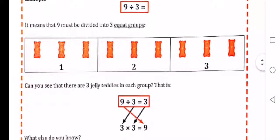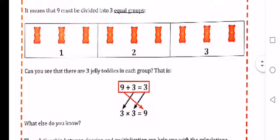Can you see that there are 3 jelly teddies in each group? That is, 9 divided by 3 equals 3. And if you do an inverse operation, it will be 3 times 3 equals 9.